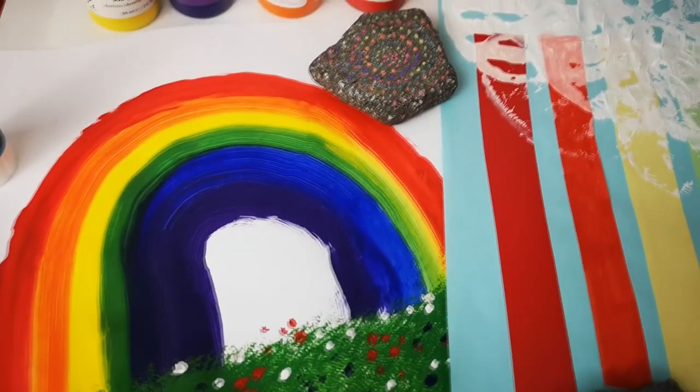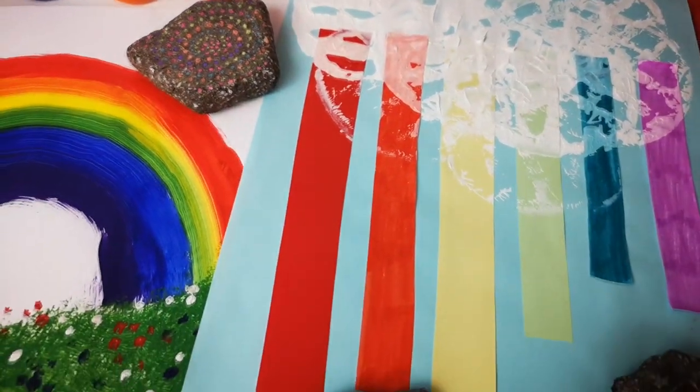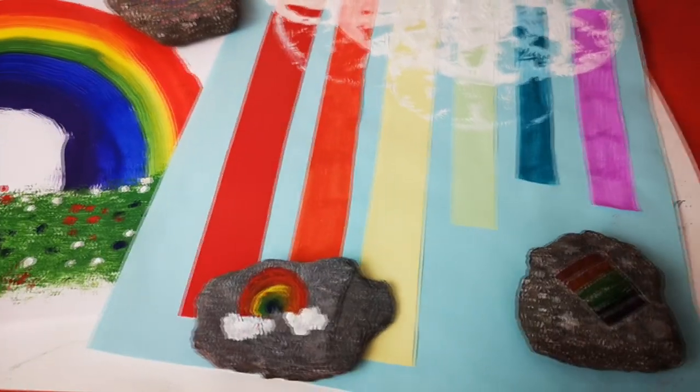Hello everyone, welcome back to Craft with Katie. I'm Katie and in today's episode I'm going to show you how you can use a kitchen sponge, a potato masher, and a rock or stone from your garden to make these three rainbow crafts that you can put in your window or on your windowsill to show your appreciation for the NHS. So without further ado, let's get creative.